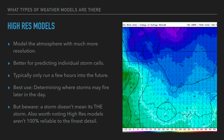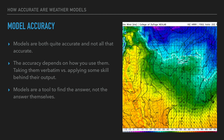So you've got to use more than just models. Model accuracy — models are both accurate and not all that accurate. The accuracy depends on how you use them. If you take them verbatim versus applying some skill behind their output, you're not going to get accurate results. For instance, if the GFS throws out a massive severe weather day ten days out and no other model is, and you just latch onto that, you could get to that day and it could be sunny and nice. Models are a tool to find the answer, but they are not the answer themselves.